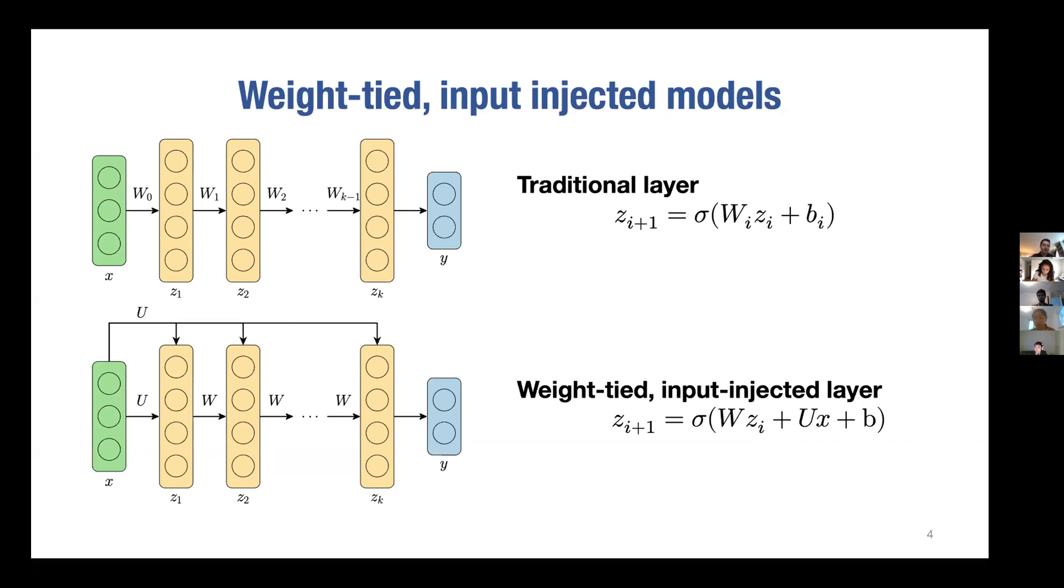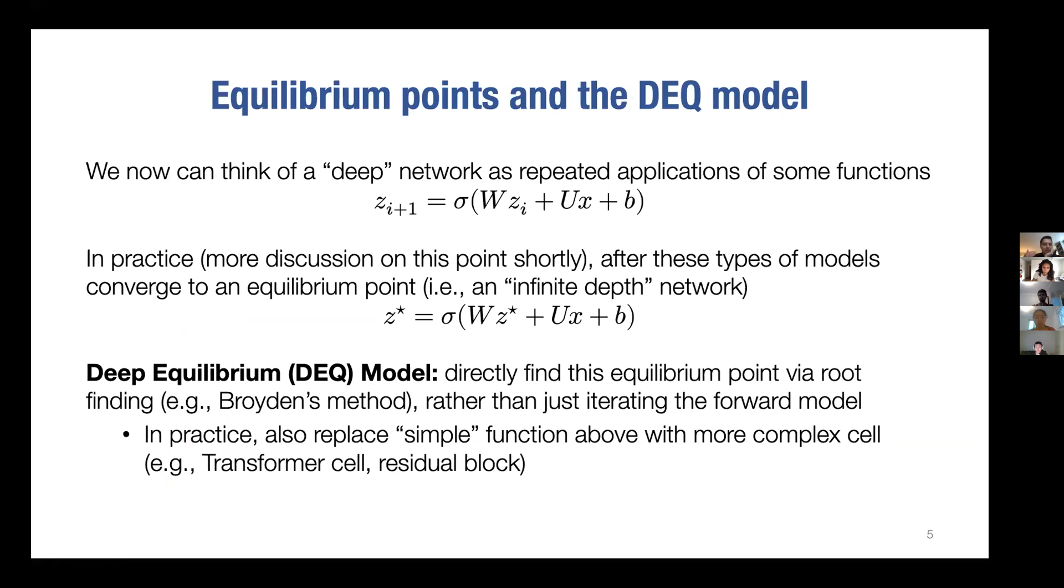Now something interesting happens because if you look at the form of this iteration of the weight-tied input injection network, it looks very much like a dynamical system - some repeated application, you're just repeatedly applying the same exact function to each layer to get the next layer.